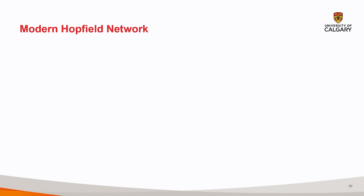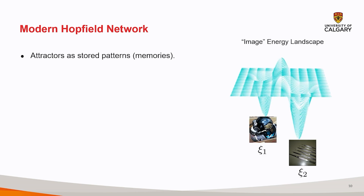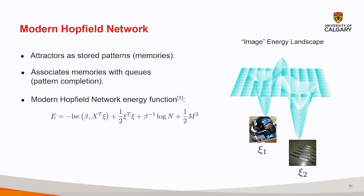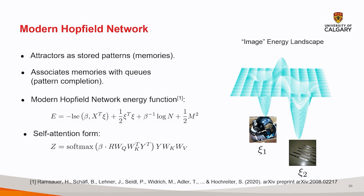How and why would such an architecture with a modern Hopfield network be useful for a computer vision task? A Hopfield network creates attractors which represent stable states the network can settle into — effectively these act as stored patterns or memories. Here on the right is an energy landscape where the basins of attraction represent stored memories of images of a football and medical devices, denoted as QC1 and QC2. The network associates stored memories with states or partial cues, a process known as pattern completion. At the core of the Hopfield network is its energy function, grounded in biologically well-supported Hebbian learning, which is the mechanism behind how the network evolves towards these stable states. Notably, the modern Hopfield network can be rewritten as the self-attention form used in the transformer architecture popular today.